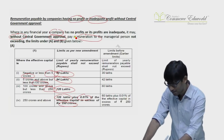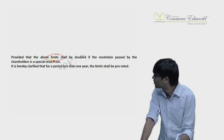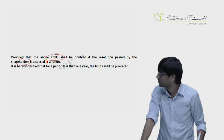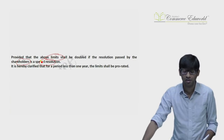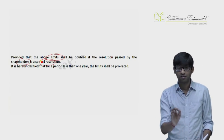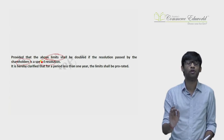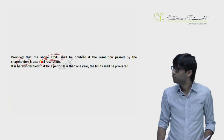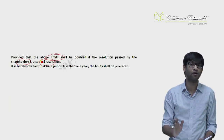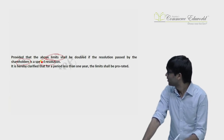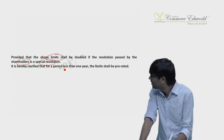These limits can also be doubled if the shareholders pass a special resolution — meaning if a special resolution is passed, you can give more remuneration even without going to the Central Government. However, if you want to pay remuneration beyond that doubled limit as well, then you have to go to the Central Government and ask for permission.